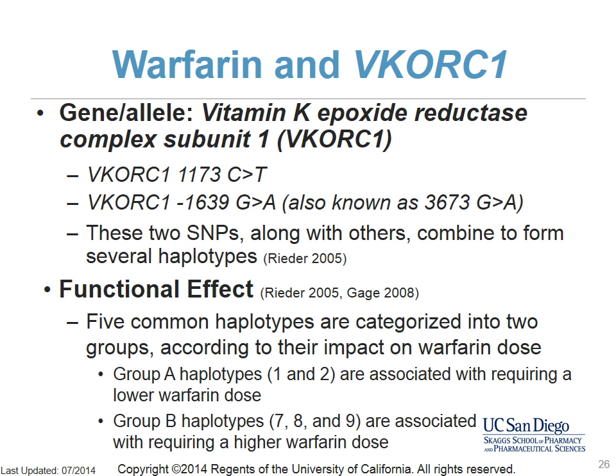The gene for vitamin K epoxide reductase complex subunit 1, or VKORC1, harbors several polymorphisms, including the 1173 C-to-T and the -1639 G-to-A (also known as 3673 G-to-A) variants. These two SNPs decrease VKORC enzymatic activity and therefore the activation of clotting factors, meaning less warfarin is required to inhibit coagulation. These SNPs combine with eight more to form nine different haplotypes. Group A haplotypes (1 and 2) are associated with requiring a lower warfarin dose and are more commonly found in Asians. Group B haplotypes (7, 8, and 9) are associated with requiring a higher warfarin dose and are more prevalent among Caucasians and African Americans.